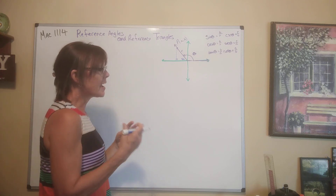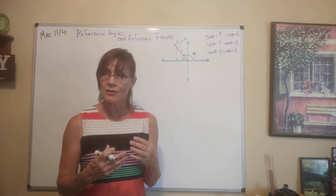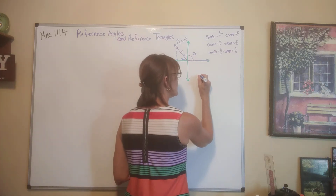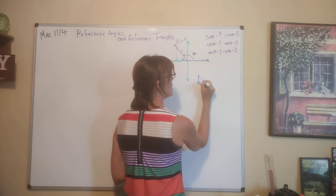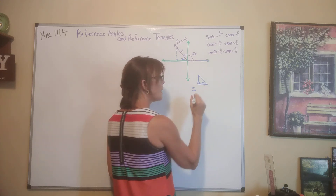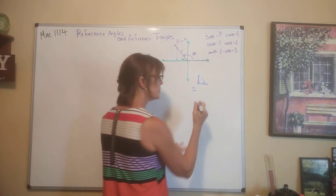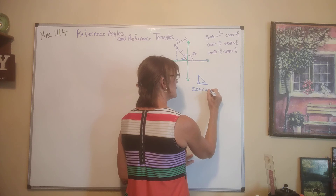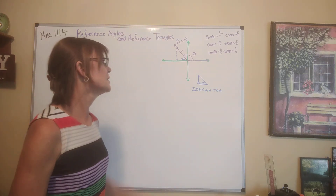We can base our six trig functions off of this reference triangle and this reference angle alpha. That frees us up to use what we've been using with right triangle trig functions — SOHCAHTOA. So if we just have this triangle and this angle alpha, we know that sine is opposite over hypotenuse, cosine is adjacent over hypotenuse, and tangent is opposite over adjacent.